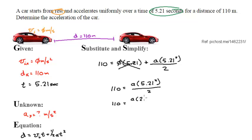I get 110 equals a times 27.1441 over 2. I can multiply both sides by 2, giving me 220 equals 27.1441 a.